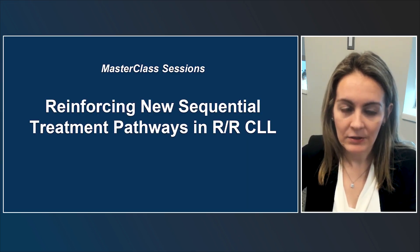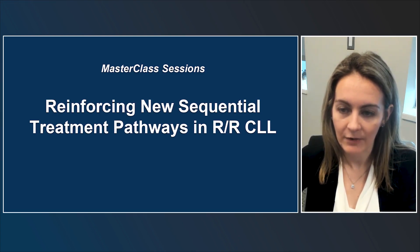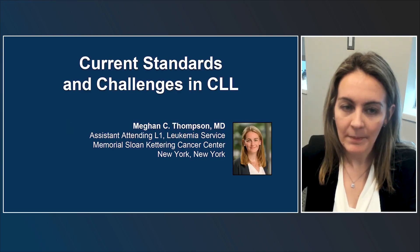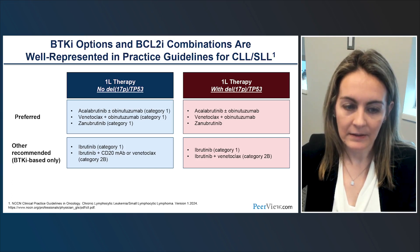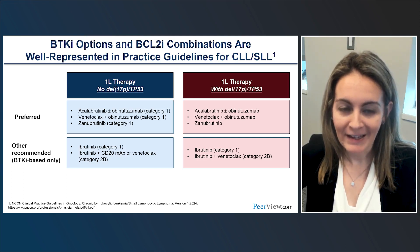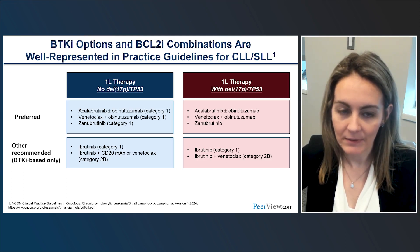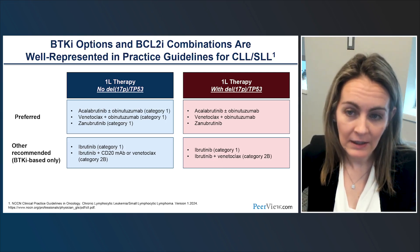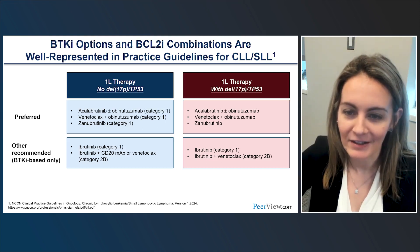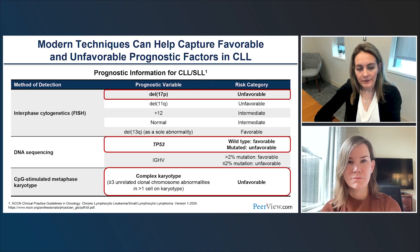We'll now turn to the topic of reinforcing new sequential treatment pathways in relapsed refractory CLL, starting with current standards and challenges. The NCCN practice guidelines for CLL frontline therapy are divided by TP53 status — patients without deletion of 17P or a TP53 mutation, and those with these alterations. The recommended strategies are novel agent-based; chemotherapy is not listed. NCCN also provides guidance on prognostic testing for patients with CLL and SLL.